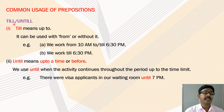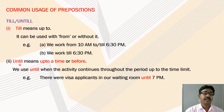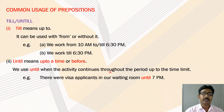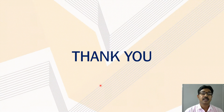The prepositions 'till' and 'until': 'till' means up to and can be used with 'from' or without it — for example: we work from 10 am to 6:30 pm; we work till 6:30 pm. 'Until' means up to a time or before. We use 'until' when the activity continues throughout the period up to the time limit — for example: there were visa applicants in a waiting room until 7 pm. Thank you.